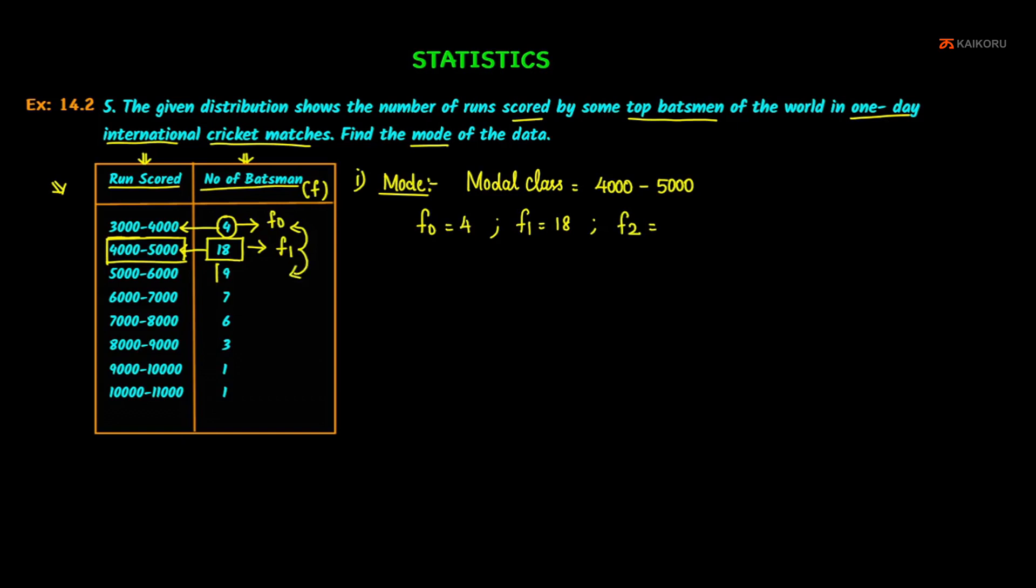So you can find the number of batsmen - L thousand minus four thousand. So the class size is 1,000. So we have all the data here. Just direct formula substitution.